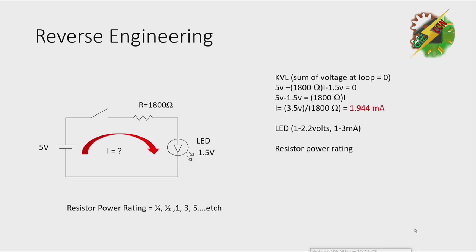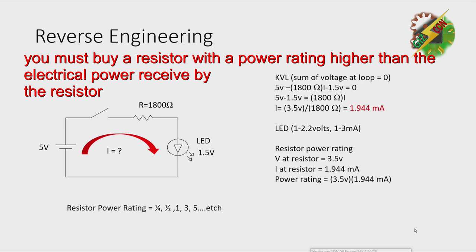And now for the resistor power rating, we need to get the voltage at the resistor which is 3.5 and the current at the resistor which is 1.944 milliampere. Then by multiplying the voltage and current at the resistor, we will have 0.006804 watts.